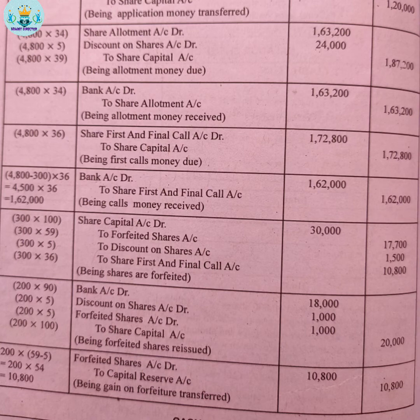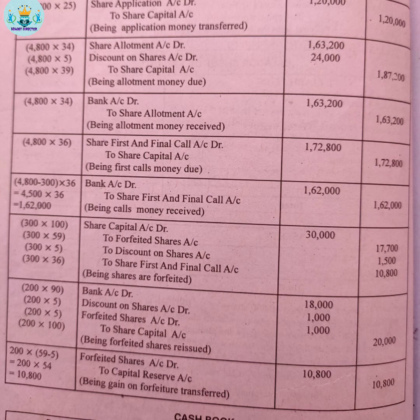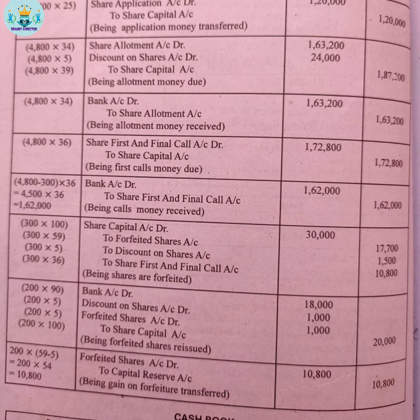The final entry is for capital reserve. The forfeited shares account balance transferred to capital reserve. For the 200 re-issued shares: forfeited value per share is Rs.59, minus the loss on re-issue of Rs.5, giving Rs.54 per share. So capital reserve = 200 × 54 = Rs.10,800.